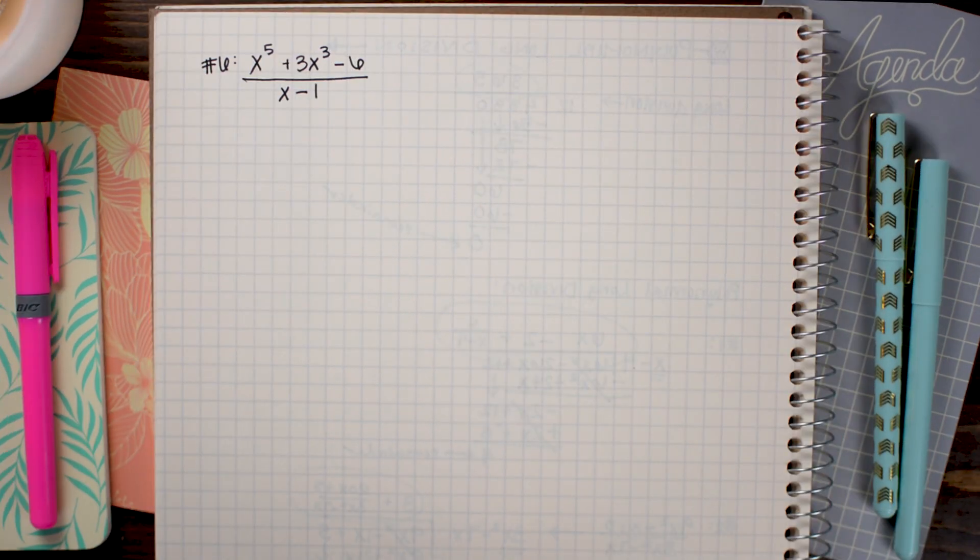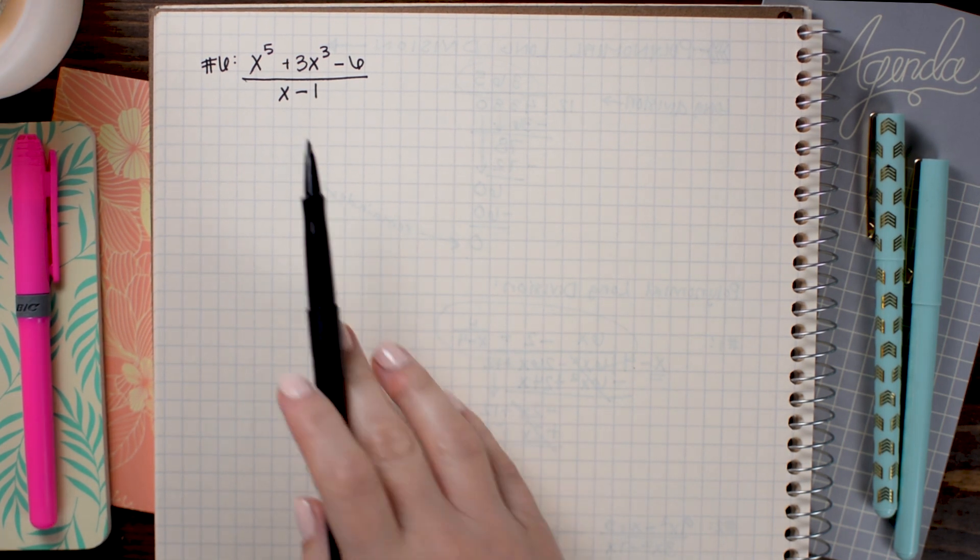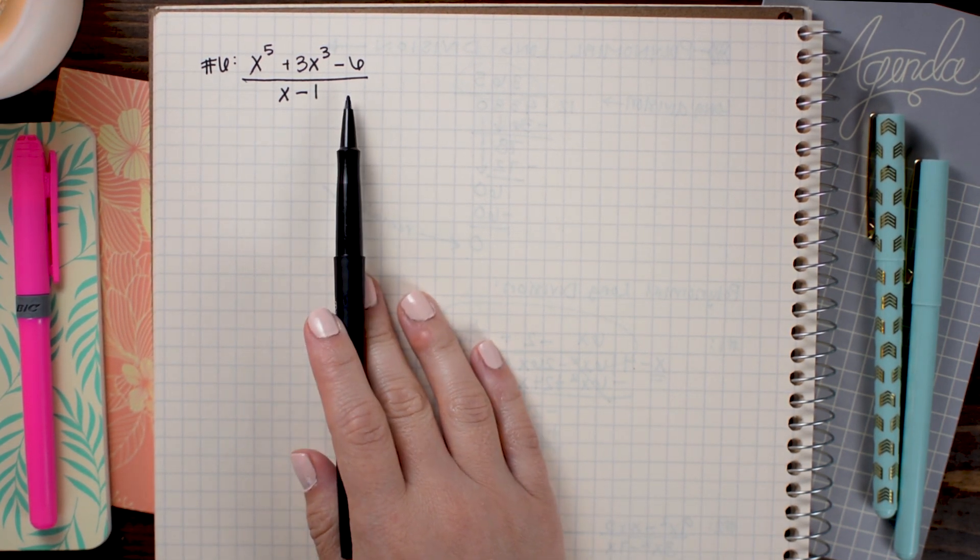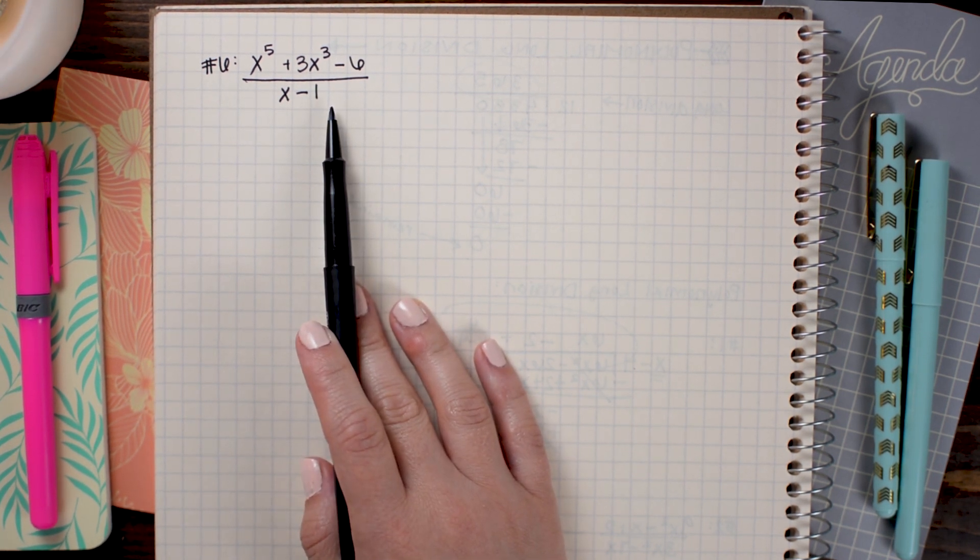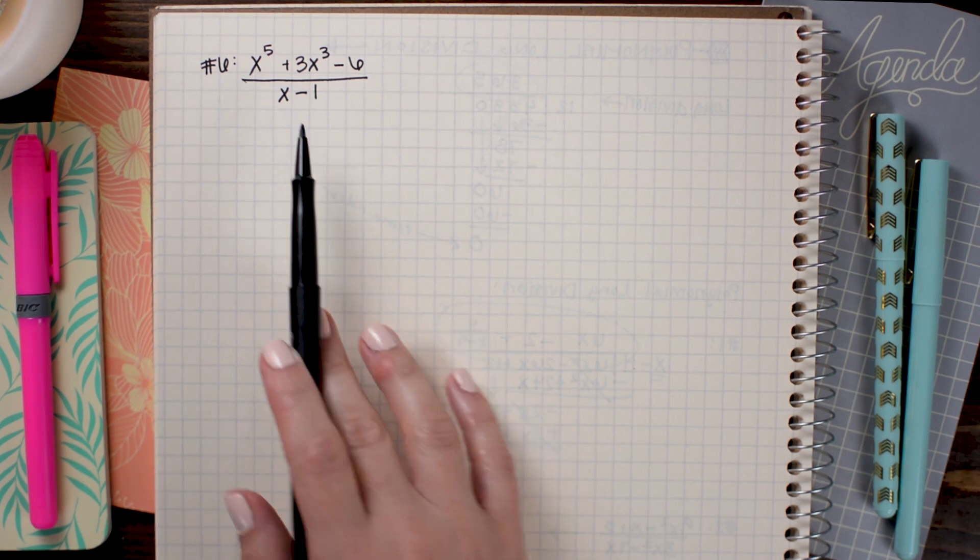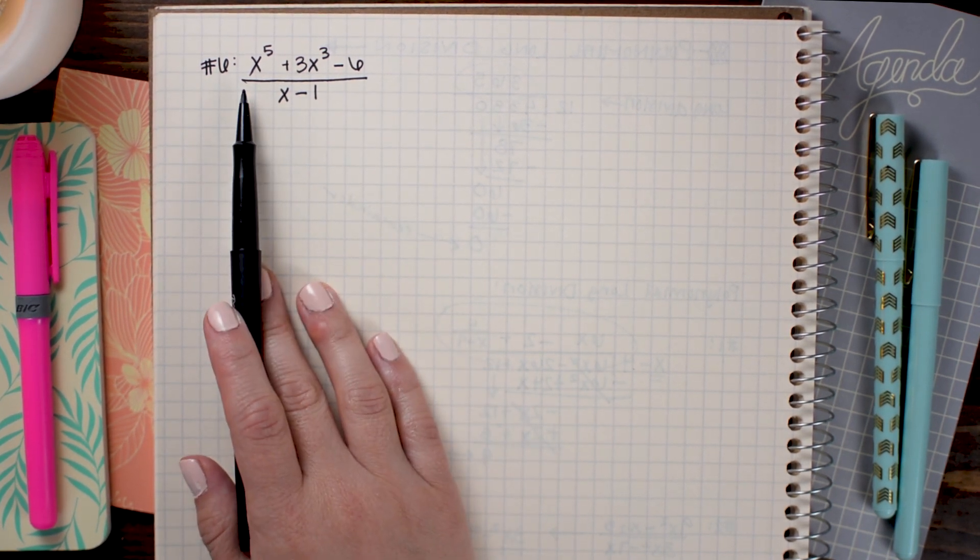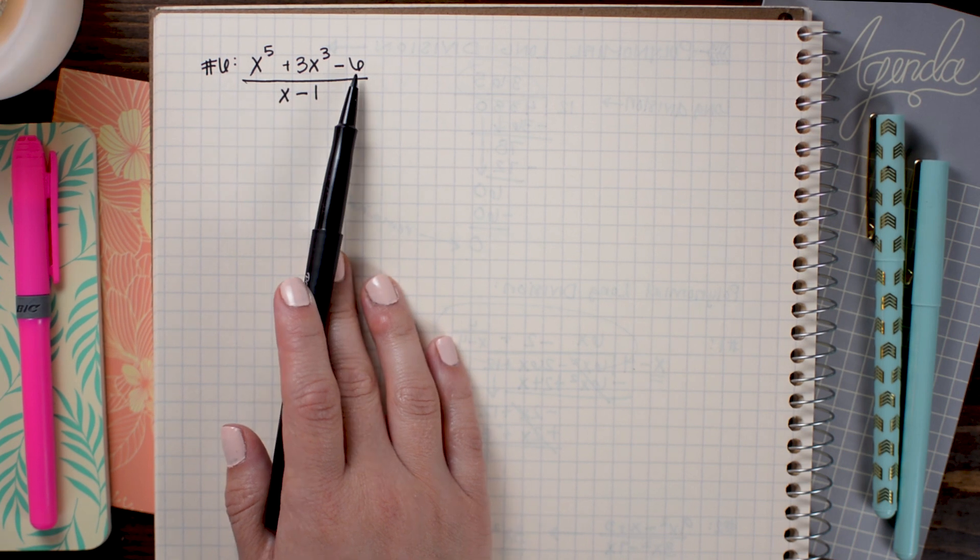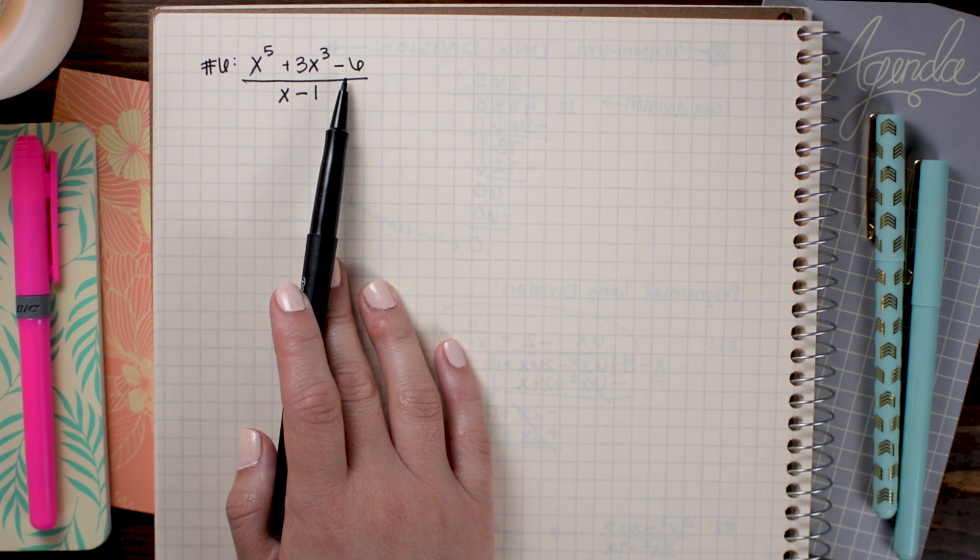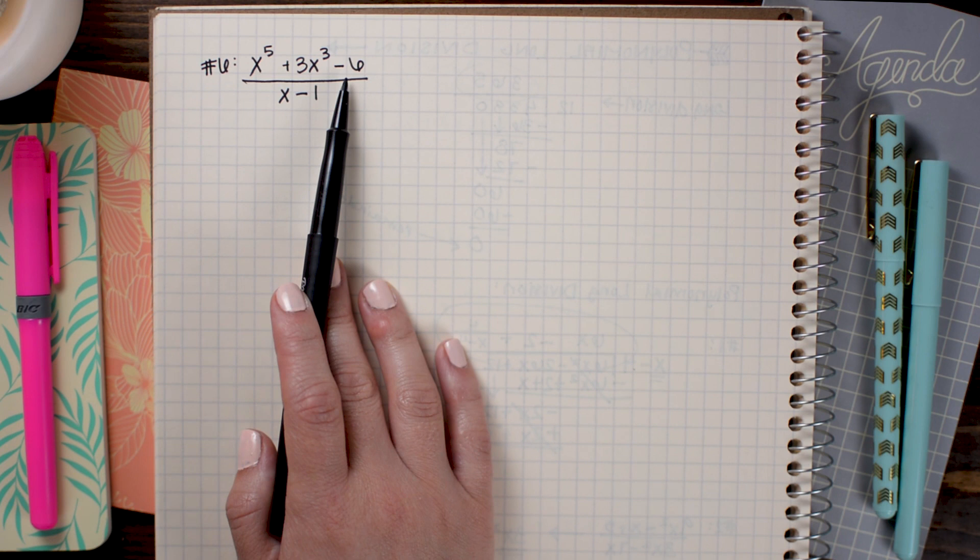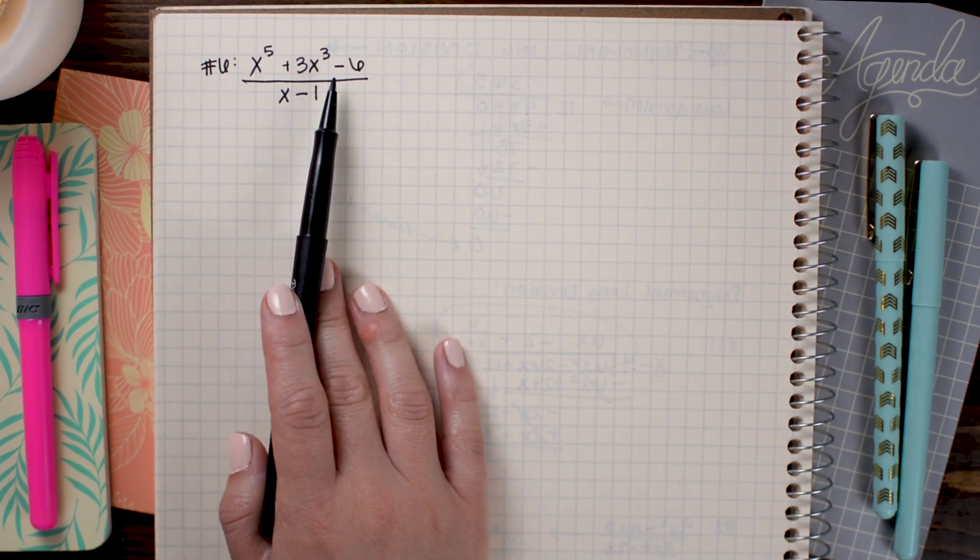In this final example, we are going to look at a case that often trips students up and causes errors. So in this scenario, we have x⁵ + 3x³ - 6 divided by x - 1. And what's different about this polynomial division is that our dividend or the thing being divided doesn't have all the powers here. See how there's no x⁴ term or x² or x term.